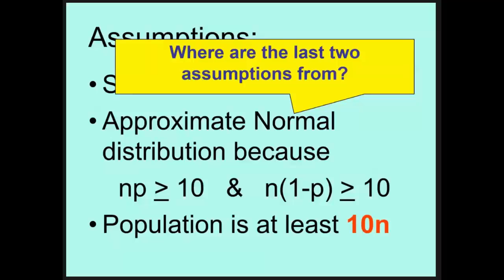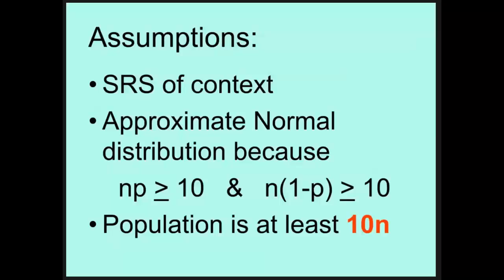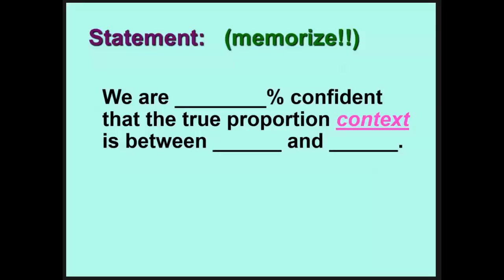Just a quick reminder, where do we get those last two statements from? Those come from assuming that we're looking at a normal distribution, which is why those two things happen to work the way they work. When we get done calculating things and actually coming up with some sort of conclusion about it, the memorized phrase that we will associate with all confidence intervals is: we are blank percent confident that the true proportion in context, whatever the words represent, is between, and then we'll actually calculate two different numbers to figure out what the confidence level is.